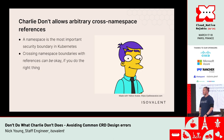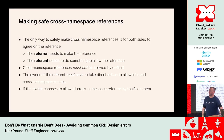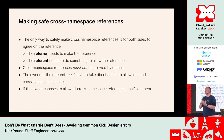Charlie Don't allows arbitrary cross-namespace references — one of the worst things you can do for CRD security. A namespace is the most important security boundary in Kubernetes. You can cross namespace boundaries with references, but only if you do the right thing. The only way to make cross-namespace references safely is for both sides to agree — the referrer makes the reference, and the referent must do something to explicitly allow it. It needs to be a handshake.